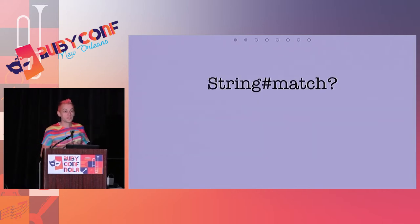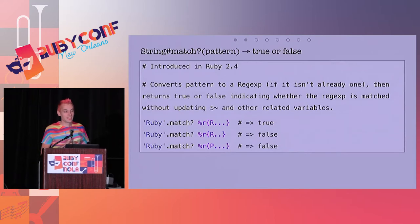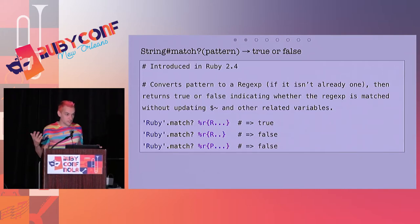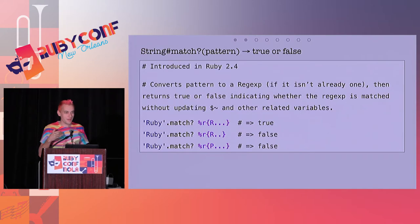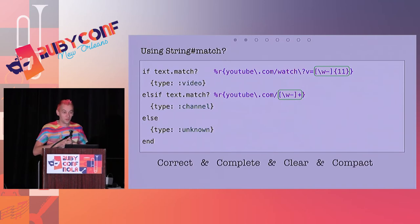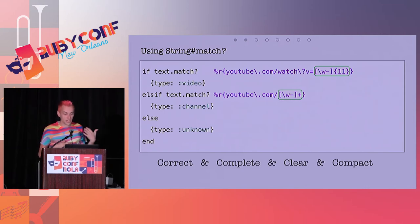For the next iteration, we're going to use the method `String#match?`. This is actually a new method — it was just added to Ruby 2.4. It lets you compare a string with a regular expression and tells you whether it's a match or not. For example, `"Ruby".match?(/R.../)` — meaning R and any three characters — is true. But `"Ruby".match?(/R../)` is false because it's missing one character. Using this method, we can rewrite our code: if it's a match for a certain regular expression, then it's a video; otherwise it's a channel; otherwise it's unknown.